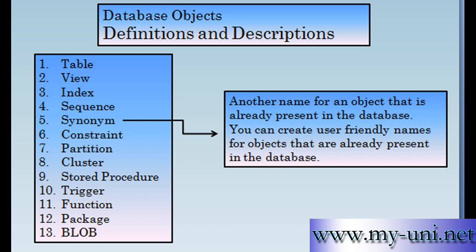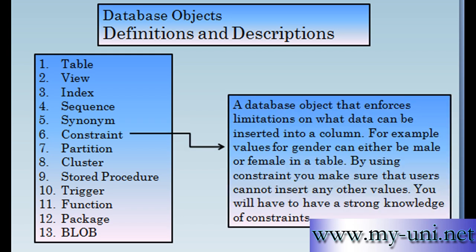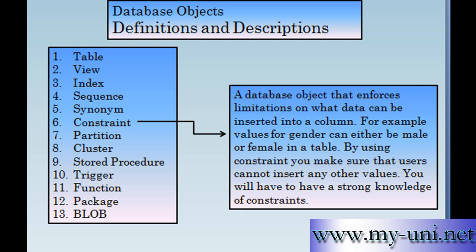A constraint is a database object that enforces limitations on what data can be inserted into a column. For example, if you define a column as a primary key column, you cannot duplicate values in that column. Another example: gender values that may be inserted into a database table. By using a constraint, you make sure that gender can either be male or female. Users won't be able to insert any other values if you use the constraint.